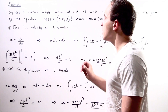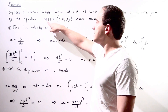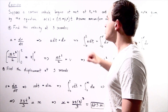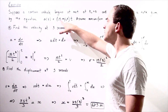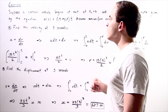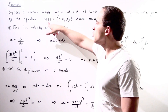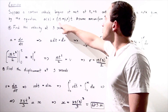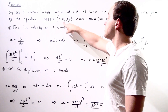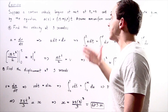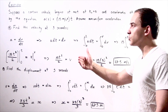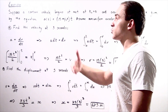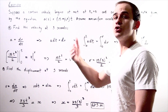For example, if we plug in t equals one, we'll see that our acceleration is 15 meters per second squared. If we plug in two, our acceleration at two seconds will be 30 meters per second squared, and so on. So as time progresses, our car's acceleration is increasing.